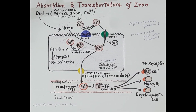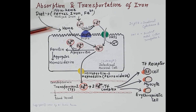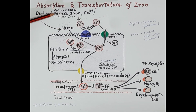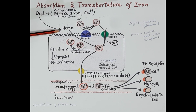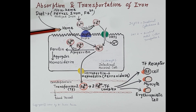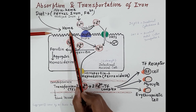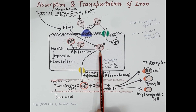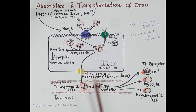Now let's understand the absorption and transportation of iron. There are two forms of dietary iron: heme form and non-heme form. Heme iron is derived from animal food sources like meat, seafood, and poultry. In heme iron, iron is present in the ferrous form — Fe2+ — which is the absorbable form, and therefore heme iron is absorbed directly as ferrous iron.